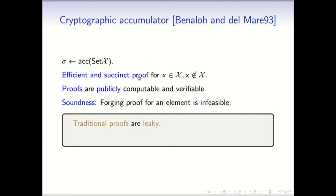The problem we are considering is really the outsourced dictionary setting where a database has been outsourced and authentic proofs of membership and non-membership have to be given with respect to the database. There is a very well-studied cryptographic primitive that deals with this problem, which is the cryptographic accumulator. The study was initiated in 1993, but there have been many flavors and variants since then. In the most general setting, a cryptographic accumulator summarizes a set chi with a very short succinct digest such that later proofs of membership and non-membership can be generated efficiently and publicly, and the proofs are also verifiable publicly.